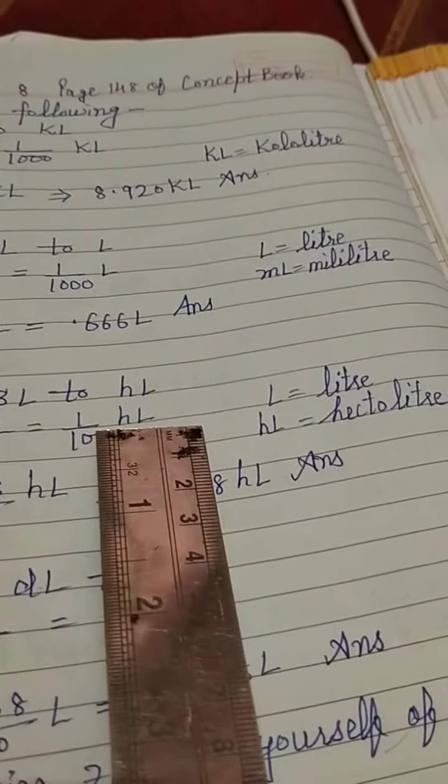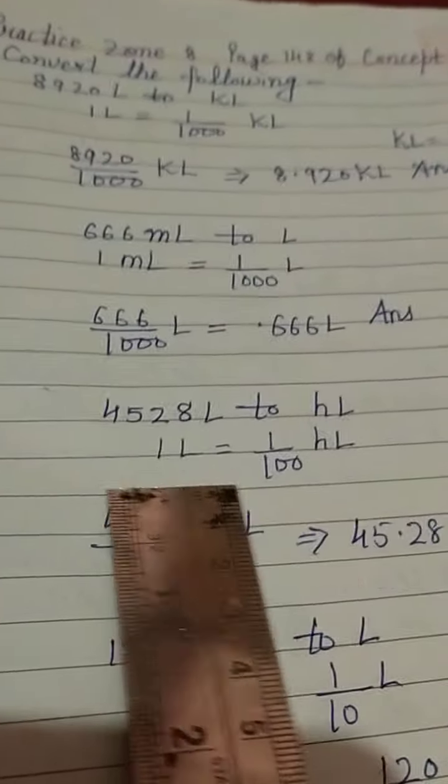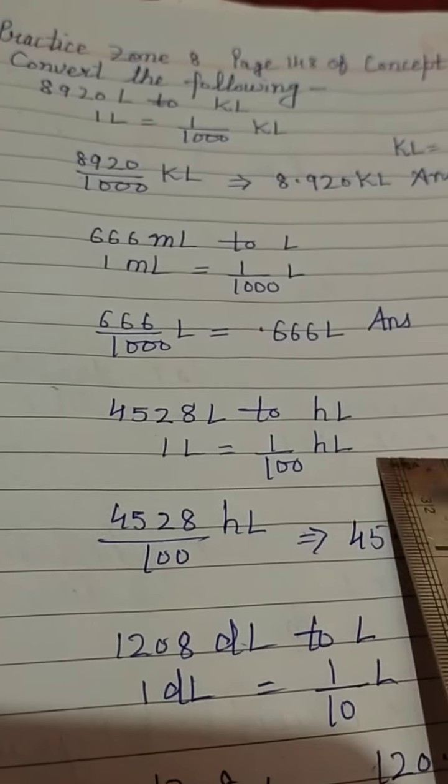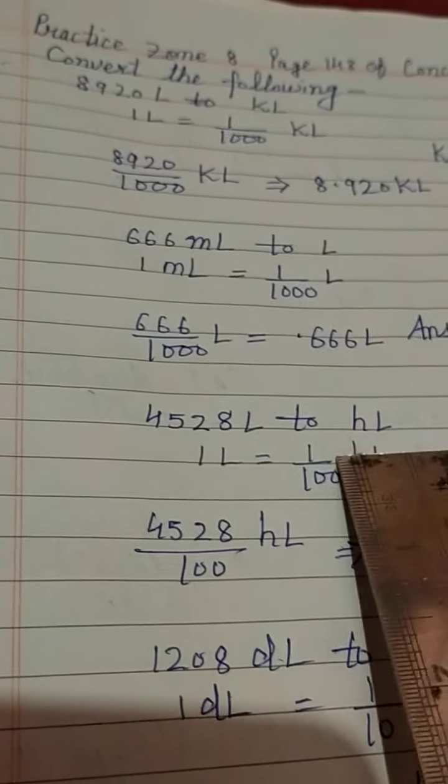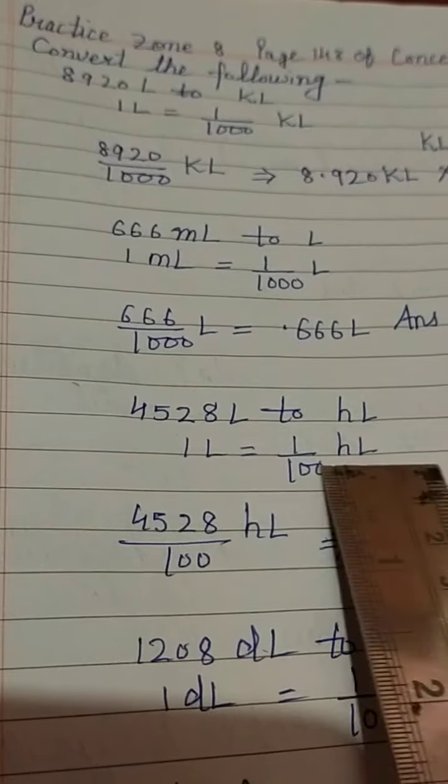Next is part C: 566 litre to hectolitre. L means litre, HL means hectolitre. As we know 1 litre is equal to 1 by 100 hectolitre. HL means hectolitre.